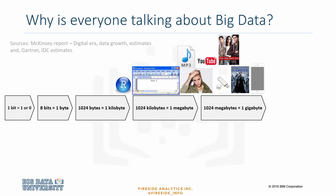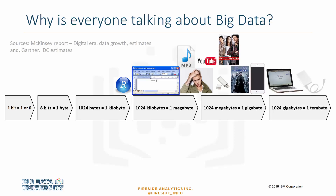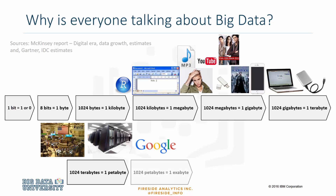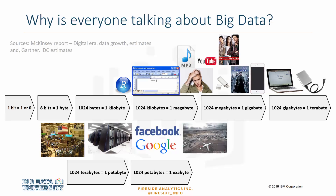These days, we have USBs or memory sticks that can store a few dozen gigabytes of information, where computers and hard drives now store terabytes of information. 1 terabyte is 1024 gigabytes. 1024 terabytes make up 1 petabyte, and 1024 petabytes make up an exabyte.